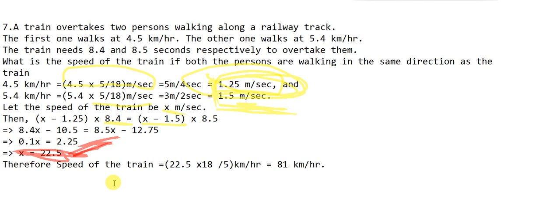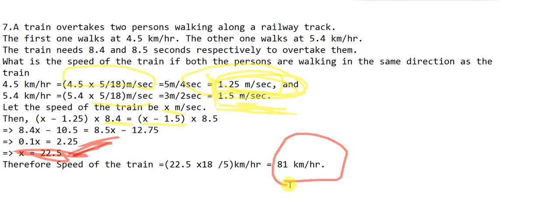So the speed of the train is 22.5 m/s. We calculated this in meters per second, but the final answer should be in km/h. Converting: 22.5 × 18/5 = 81 km/h.